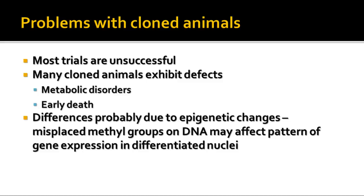The first cat was cloned at Texas A&M around the year 2000, and it was called CopyCat. What they found was that it didn't look identical to the parent because it was a calico cat. The calico pattern is the result of the random turning off of one of the X chromosomes in a female — X chromosome inactivation — and that's very random, so it determines what the color pattern is. It doesn't have anything to do with where the genes are; it just has to do with which cells turn off which X chromosome.